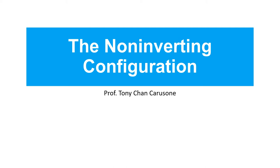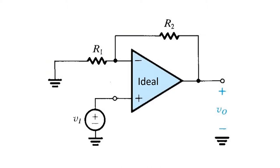In this video, we'll learn about the non-inverting op-amp configuration. Here you see the non-inverting configuration pictured. We're going to first analyze it assuming an ideal op-amp. The first difference between the non-inverting and inverting configuration you may notice is that the input source is here connected to the positive input terminal of the op-amp.